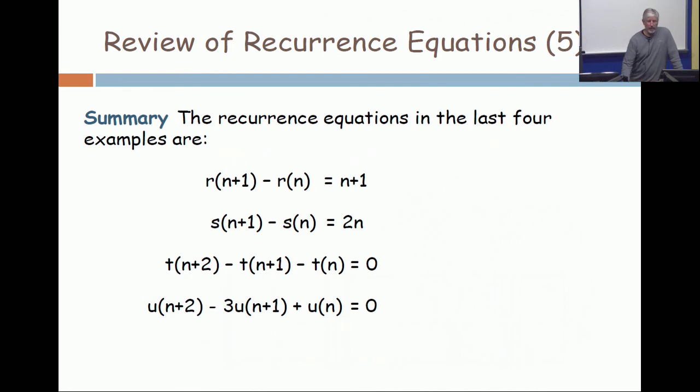So let's write these in one common form. And I've chosen the letters - if you look back on the slides, you'll see I've used R, S, T, and U just to differentiate between the four. Now, if you write them in a common form, where you write all the function terms on one side, like R of n, R of n plus 1, etc., and then write on the right-hand side everything which doesn't involve the sequence. So the first one looks like R(n+1) minus R(n) equals n plus 1.